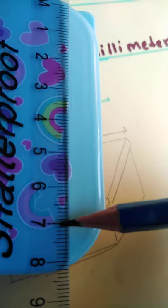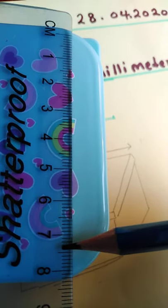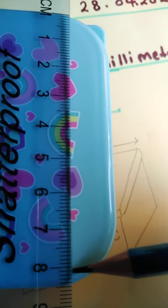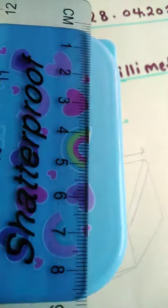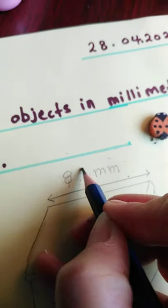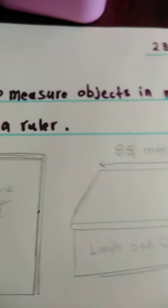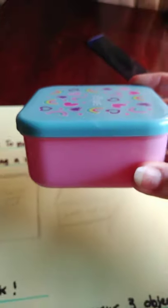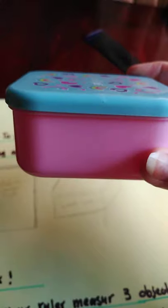It's here... ten, twenty, thirty, forty, fifty, sixty, seventy, eighty, eighty-five. Well, I made a mistake here. It should be 80, not 70. You can always check your measurement. So it's 85 millimeters, the width of this box.